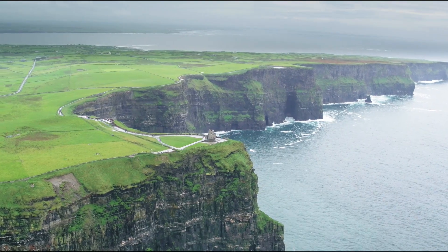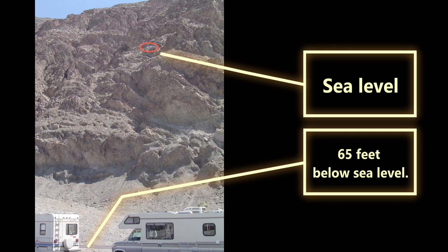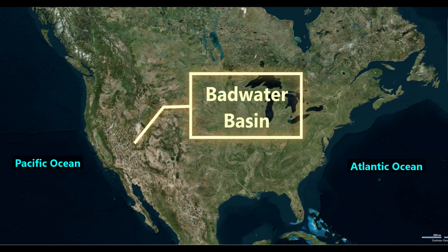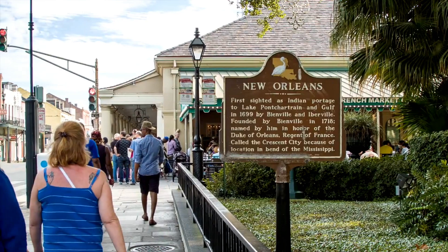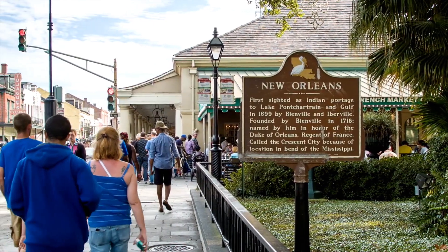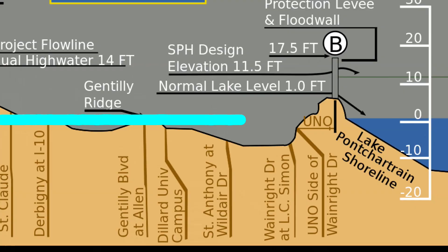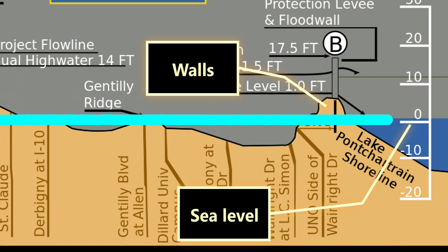Although almost all dry land is above sea level, there is some dry land that is below sea level. For example, these people are walking on a platform in California that is almost 300 feet below sea level. Ocean water can't flood this place since there are mountains between this place and the ocean. Other areas, such as much of New Orleans in Louisiana, are also below sea level, but New Orleans is vulnerable to flooding, so we make walls like these to help keep the ocean water out.